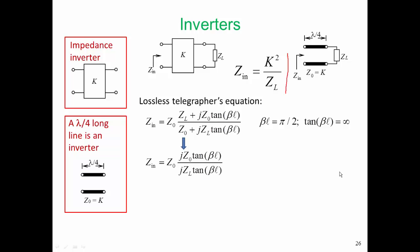So the ZL and Z zero terms on their own can be dropped. Of course, the tan beta Ls now cancel, and we end up with Z in equal to Z zero squared over ZL. What that means is that if we have a small load at the end of our transmission line, we can greatly enlarge the value of that impedance, scaling it by the characteristic impedance squared of the transmission line.